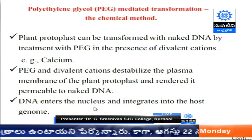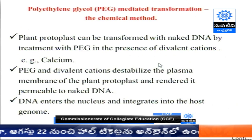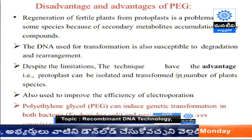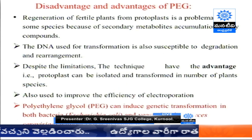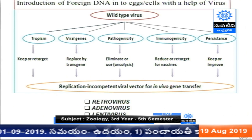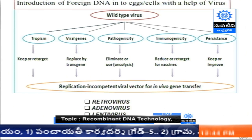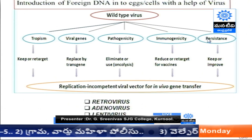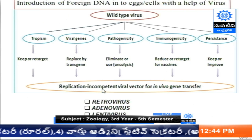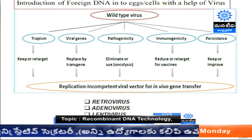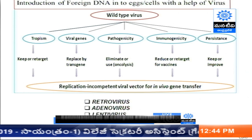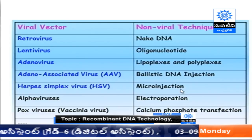In PEG-mediated transformation, naked DNA is transformed into cells using polyethylene glycol with divalent cations. For viral methods, viruses are dangerous because they have tropism, viral genes, pathogenicity, and immunogenicity. To address this, the viral genome must be identified and damaging genes shut off; these are called replication-incompetent viral vectors for in vivo gene transfer. One type is the retrovirus, derived from Moloney murine leukemia virus, which contains reverse transcriptase that converts mRNA to DNA, useful especially for cancer treatment, but it can only act on dividing cells.